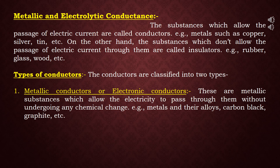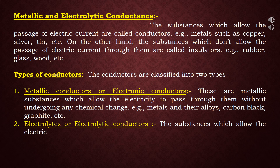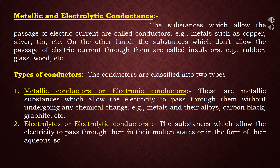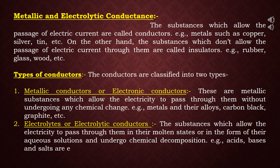The conductivity of metallic conductors is quite high. The second type of conductors are electrolytes or electrolytic conductors — substances which allow electricity to pass through them in their molten state or in the form of their aqueous solution, and undergo chemical decomposition. For example, acids, bases, and salts are electrolytes. They can conduct electricity with the help of ions, because these electrolytes dissociate into ions when dissolved in solvents.